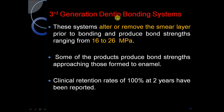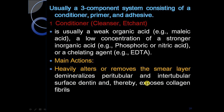Third generation dentine bonding systems alter or remove the smear layer. Unlike the first and second generation, the third generation removes the smear layer and produces a bond strength of about 16 to 26 MPa. Some products produce bond strengths approaching those formed to enamel. Clinical retention rate is 100% at 2 years. It is usually a 3-component system consisting of a conditioner, a primer, and an adhesive.